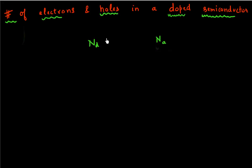Let's see what happens if I add a donor. If I add a donor and that donor atom ionizes, it gives away an extra electron that it had to the lattice, and it leaves behind a positively charged donor atom.